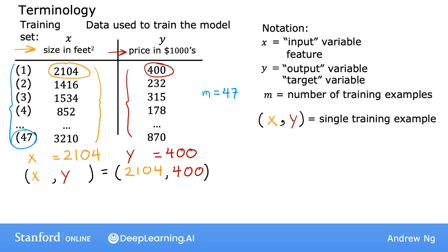So to refer to a specific training example, this will correspond to a specific row in this table on the left. I'm going to use the notation x superscript in parentheses i comma y superscript in parentheses i. The superscript tells us that this is the i-th training example, such as the first, second, or third up to the 47th training example. i here refers to a specific row in the table. So for instance, here is the first example when i equals 1 in the training set. And so x superscript 1 is equal to 2,104 and y superscript 1 is equal to 400.